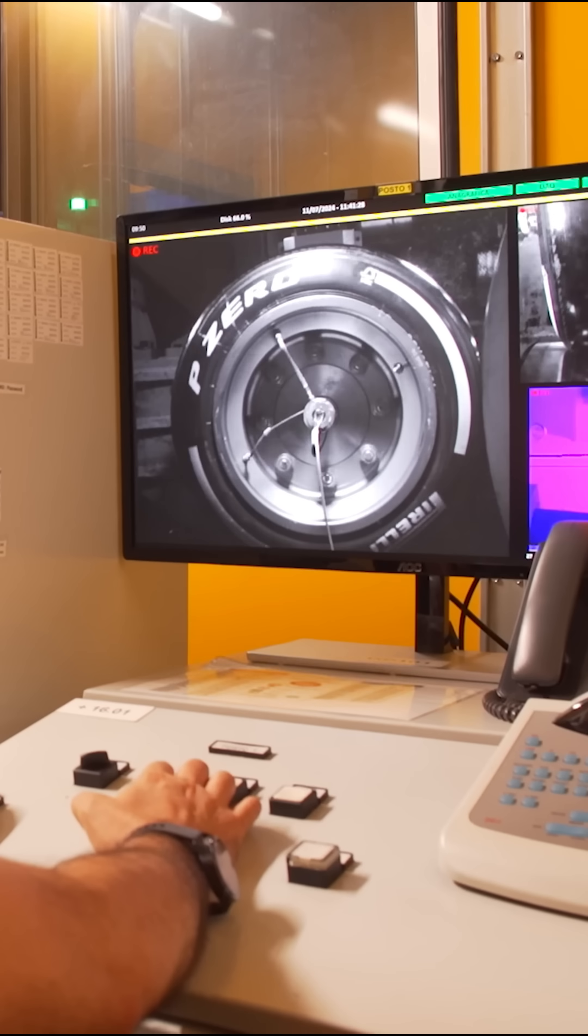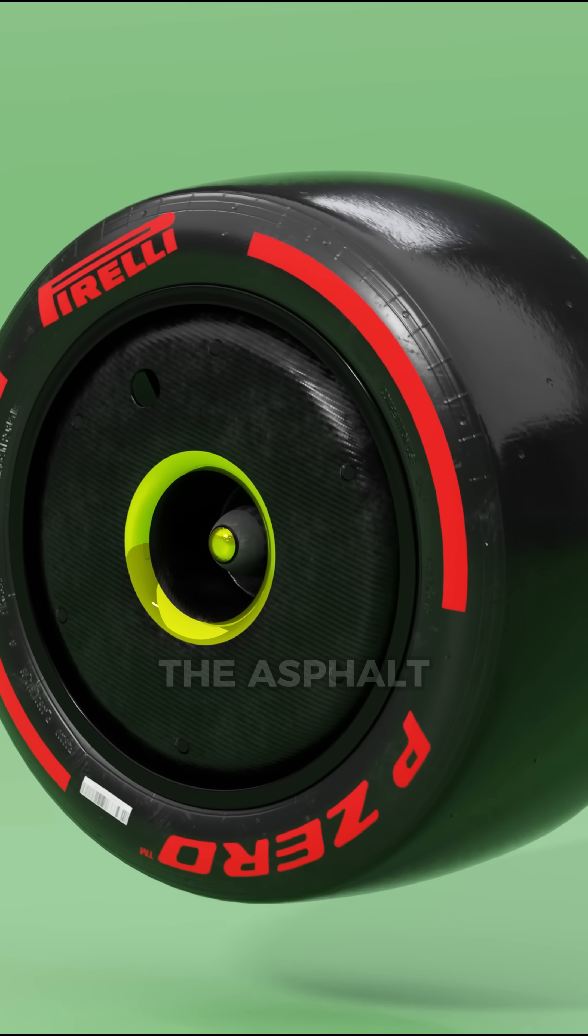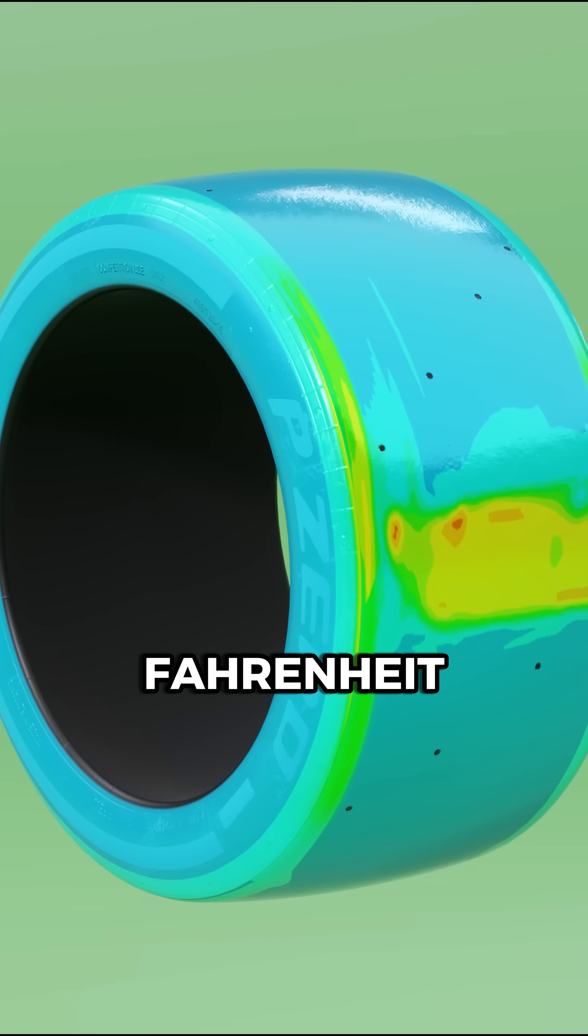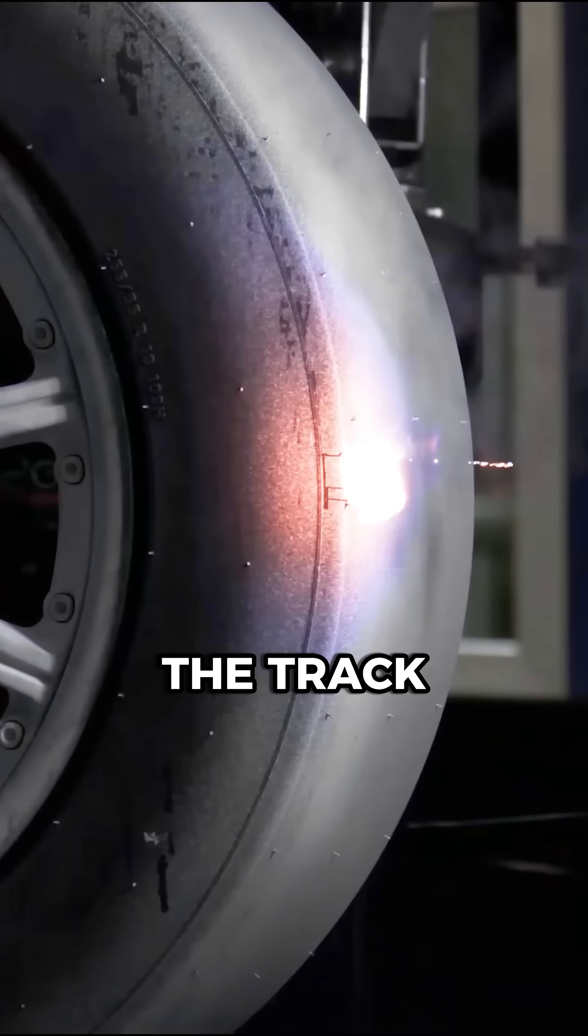Their compound is extremely soft, designed to heat up fast and bite into the asphalt. At around 200 degrees Fahrenheit, they reach peak grip by literally melting into the track.